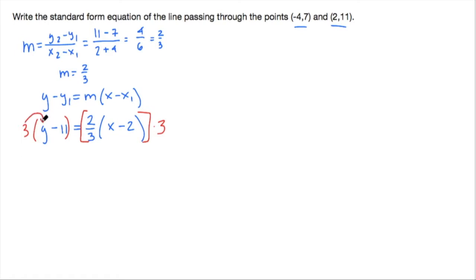This 3 here is going to distribute to both terms here, giving us 3y minus 33. Now, over on the other side, notice we have 2/3 times this quantity times 3. We don't need to distribute the 3 to both the quantity x minus 2 and by the fraction, because they're all products, 3 products in a row, as opposed to here, the y minus 11 was a subtraction between the 2 of them.